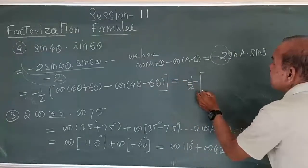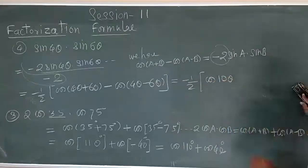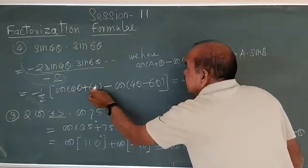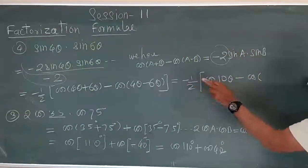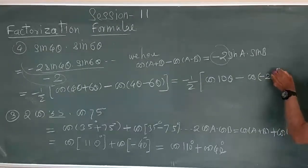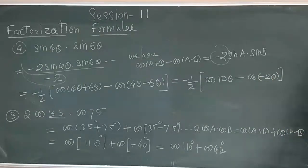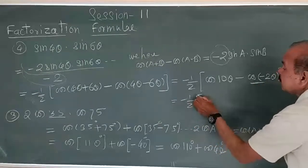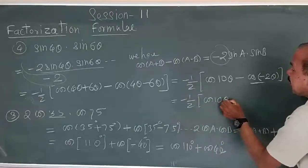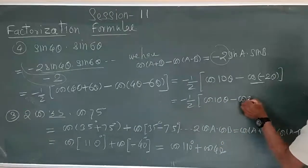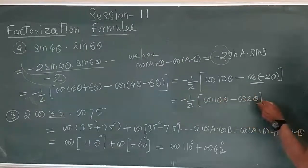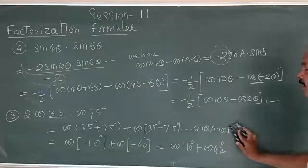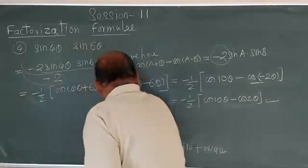So the answer is minus one-half times bracket cos of 4θ plus 6θ, which is 10θ, minus cos of 4θ minus 6θ, which is minus 2θ. Since cosine has no effect of negative sign, that gives minus one-half times cos of 10θ minus cos of 2θ. That is your sum or difference conversion.